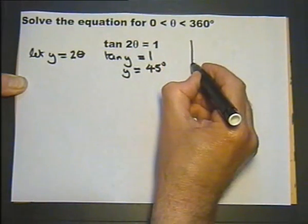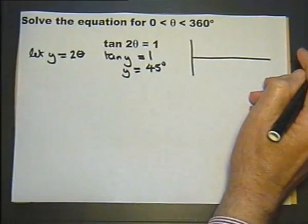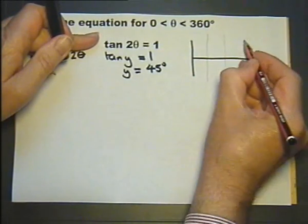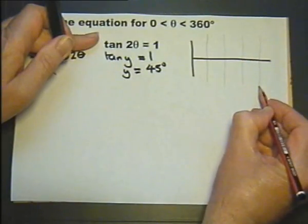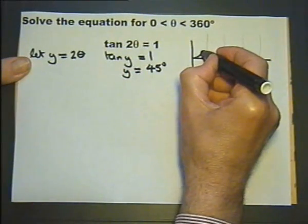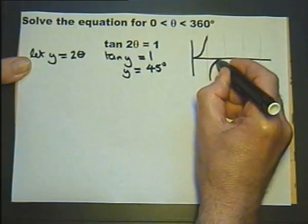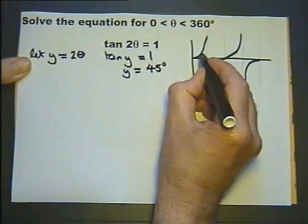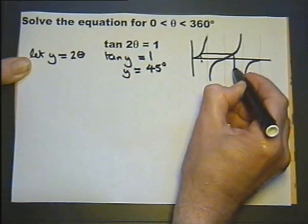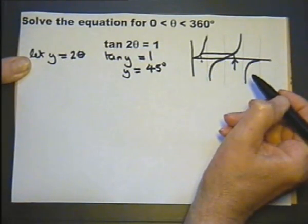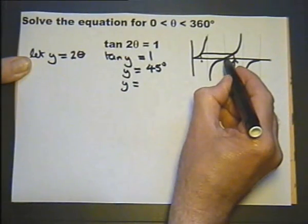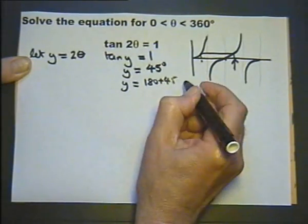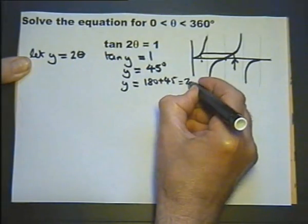If we inverse tangent both sides, tan y gives us y and the inverse tangent of 1 gives us 45 degrees, with or without a calculator. Let's have a quick sketch of our tangent graph — we need the asymptotes going through 90 degrees, 180 degrees, 270 degrees, and 360 degrees. So 45 degrees is there, and therefore this angle here will have the same tangent value, so y could also equal 180 add on 45, in other words 225 degrees.